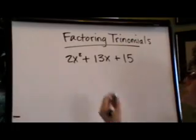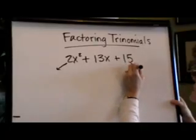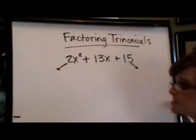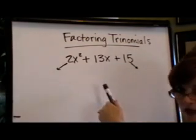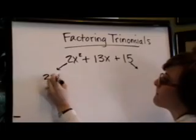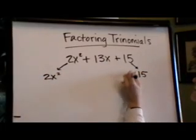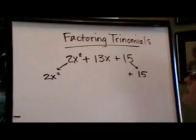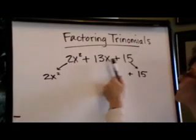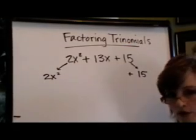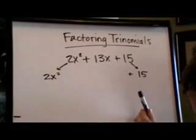The first thing we're going to do is copy the first and last terms, but spread them out a bit to give the center space more room. The second step is to multiply the leading coefficient with the constant — in other words, multiply the first and last numbers. 2 times 15 is 30.